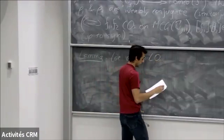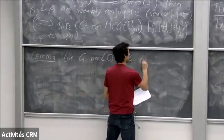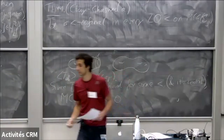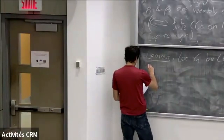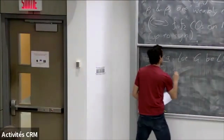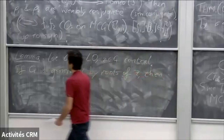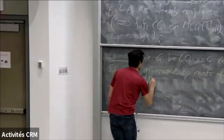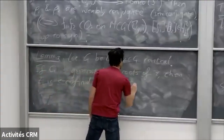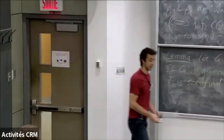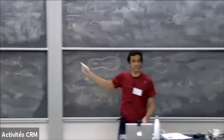The lemma states: let G be left-orderable, and z ∈ G central. Suppose that G is generated by roots of z — meaning elements x such that some power of x equals z. Then z is co-final for every left ordering. This is the little lemma you have to prove — not terribly difficult, it's a fun little exercise.